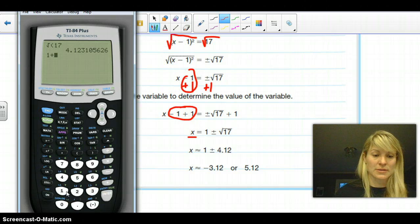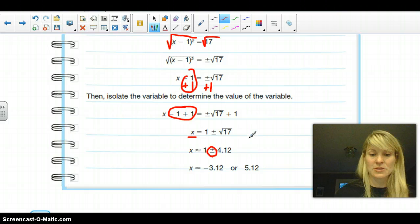We're going to do 1 plus 4.12, and that gave you 5.12. And then we can do 1 minus 4.12, and that gave you the negative 3.2. So you're going to do it with the plus. That just means 1 plus 4.12, and that means 1 minus 4.12.